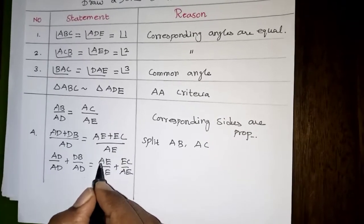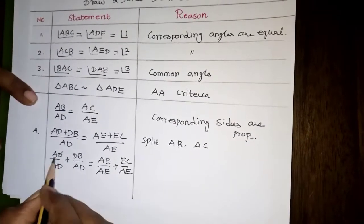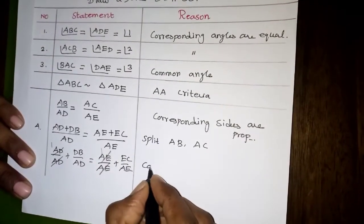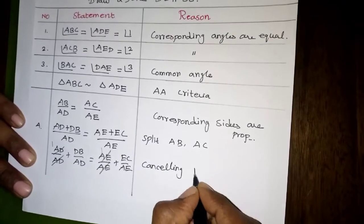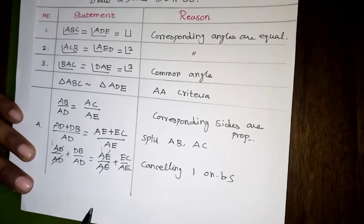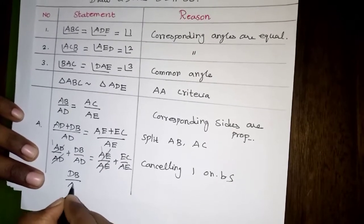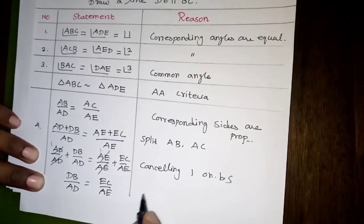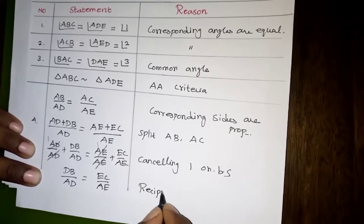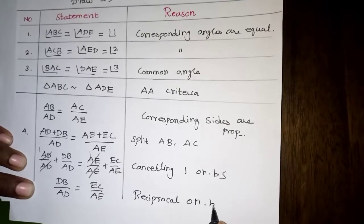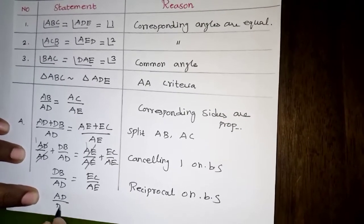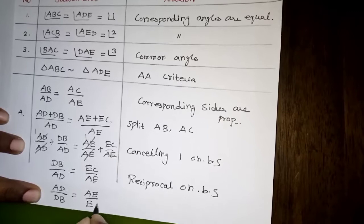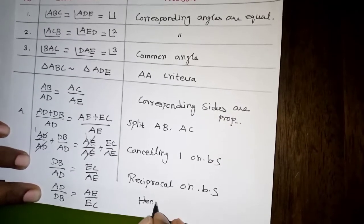Canceling AE by AE and AD by AD, we get 1 on both sides. The ones cancel from both sides. After taking the reciprocal on both sides, we arrive at AD divided by DB equals AE divided by EC. Hence the proof is completed.